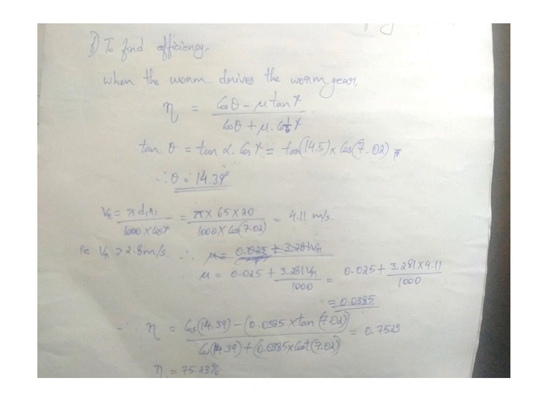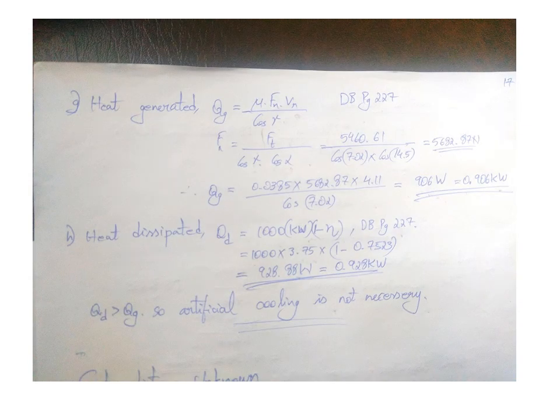Next step was heat generated Qg equals mu times Fn times Vr by cos gamma. Mu can be found from the data book page 227, and Fn will be like Ft by cos gamma times cos alpha. So heat generated Qg becomes 906 watt or 0.906 kilowatt. And heat dissipated Qd equals 1000 times kilowatt times 1 minus eta, that is we get 928.88 watt.